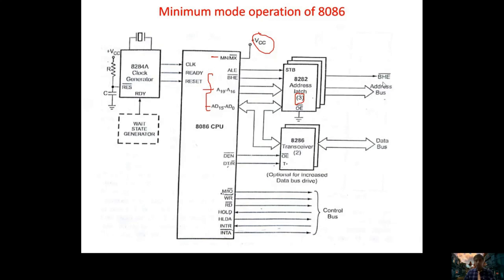The three latches separate the multiplexed address and data lines, and multiplexed address and status lines, into pure address lines and status lines. We get address lines A0 to A19 — 20 address lines total. The role of the transceiver is simply transmitting or receiving data between 8086 and an external device. It transmits 16-bit data and is controlled by DE̅N̅ and DT/R̅ signals.